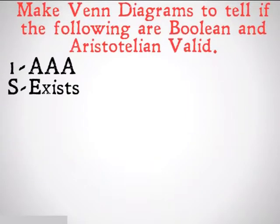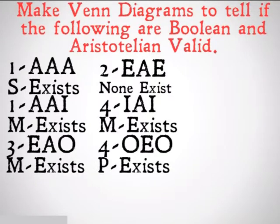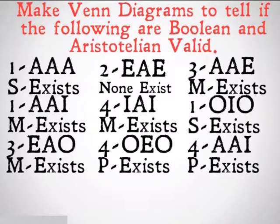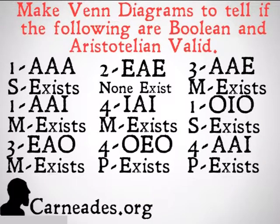Next up, we're going to be looking at the answers to the following problems. Your job is to make a Venn diagram for each of these nine different examples and tell if it's Boolean valid and tell if it's Aristotelian valid. Watch a new video every single day for 100 days here at carnades.org, and stay skeptical, everybody.